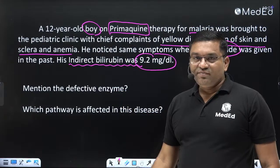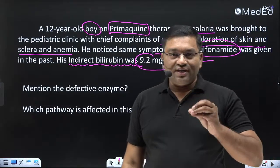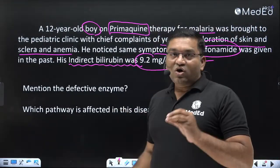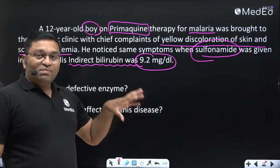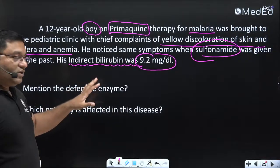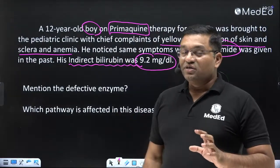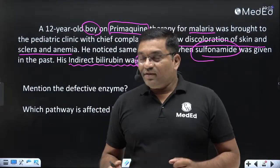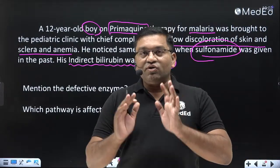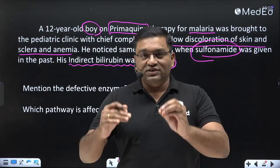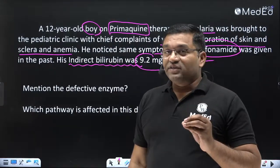This can be a short answer question or a long answer question when connected with the metabolic pathway. The pathway affected here is the HMP shunt — hexose monophosphate shunt. It is an alternative pathway for oxidation of glucose into CO2, which is why this pathway is known as the shunt pathway.